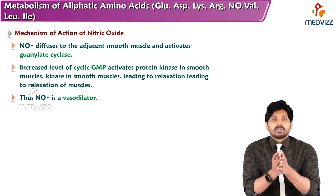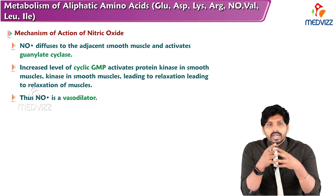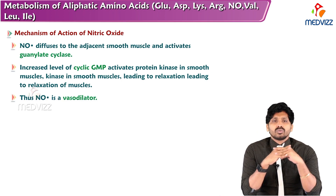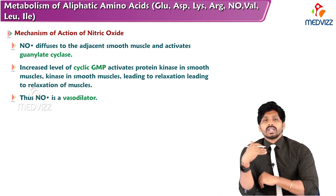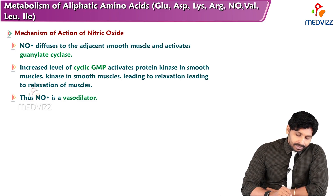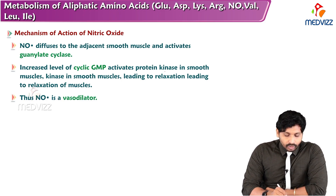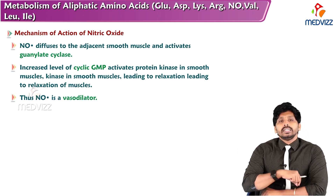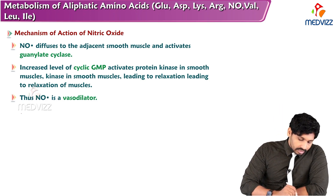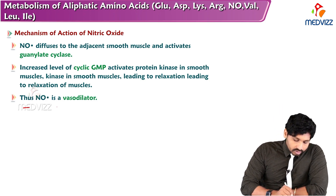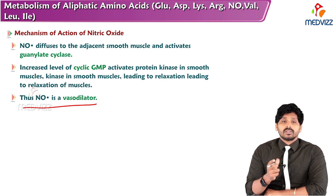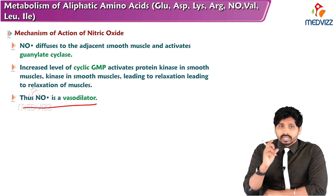Mechanism of action of nitric oxide: nitric oxide immediately diffuses to adjacent smooth muscles and activates guanylate cyclase, increasing levels of cyclic GMP. This in turn activates protein kinase in smooth muscles, leading to relaxation of muscles. Thus the overall effect of nitric oxide is vasodilation — it is a potent vasodilator.